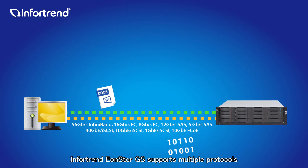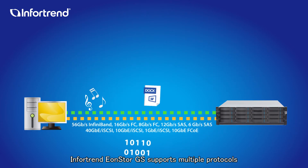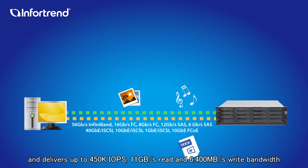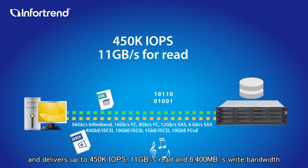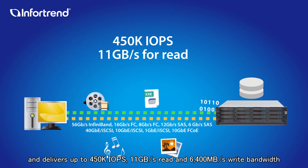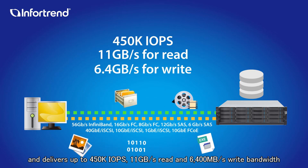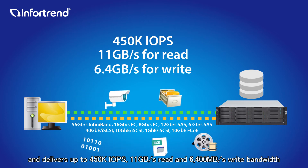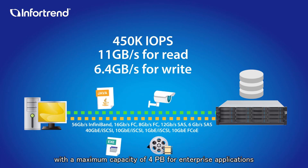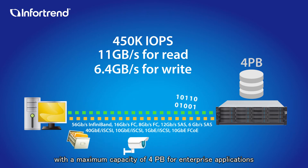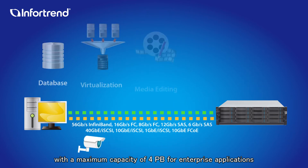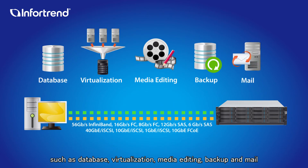InfoTrend EonStore GS supports multiple protocols and delivers up to 450k IOPS, 11GB per second read, and 6400MB per second write bandwidth with a maximum capacity of 4 petabytes for enterprise applications such as database, virtualization, media editing, backup, and mail.